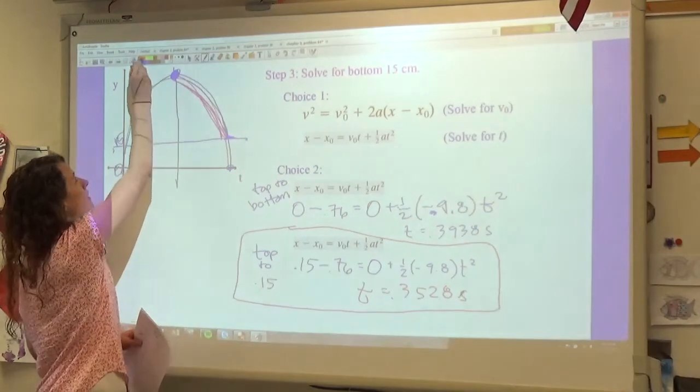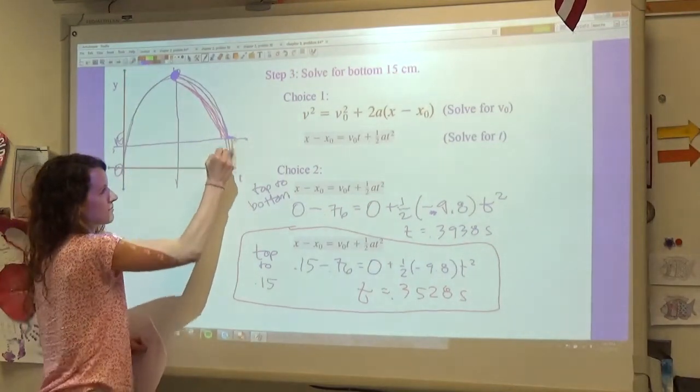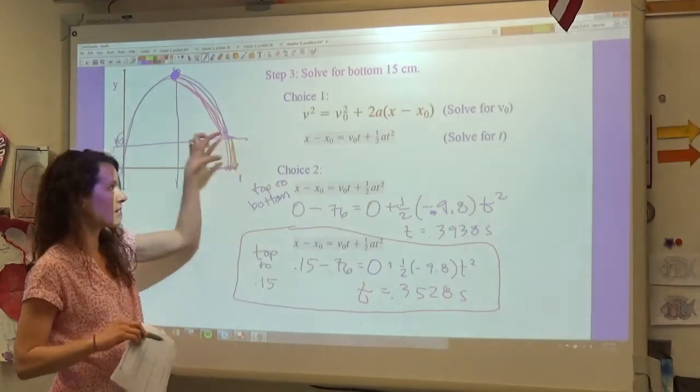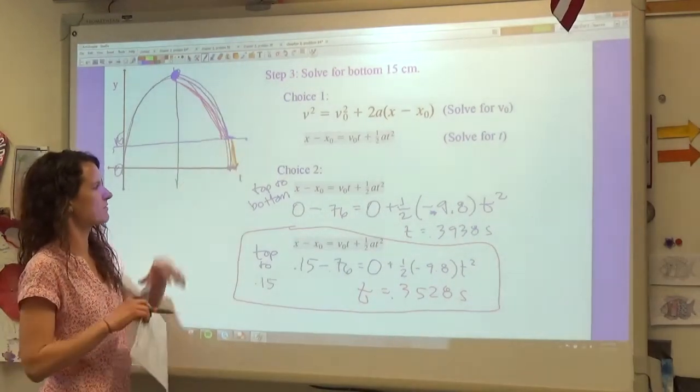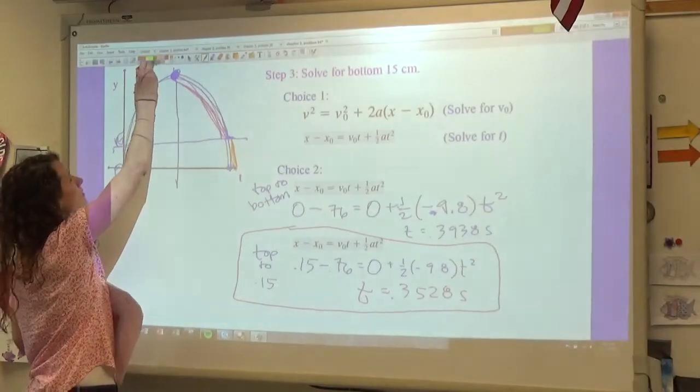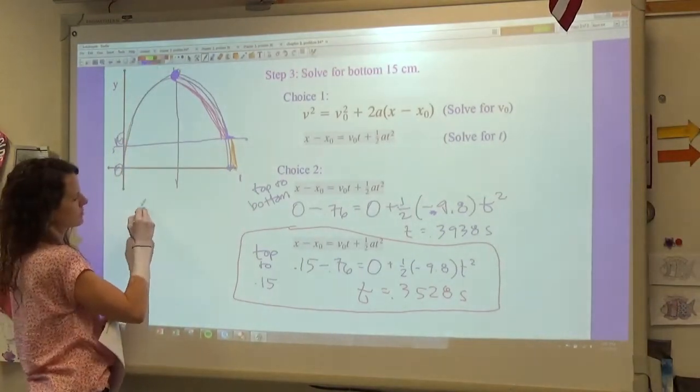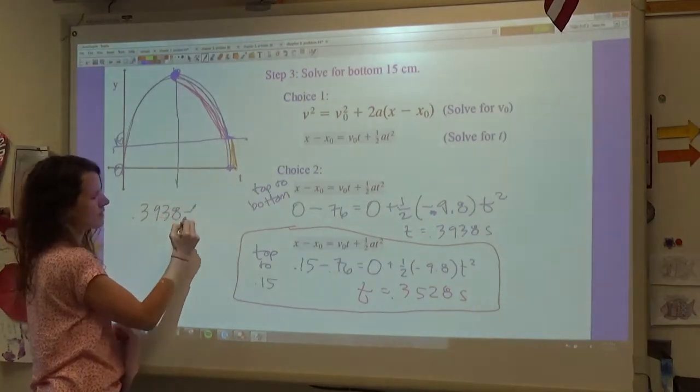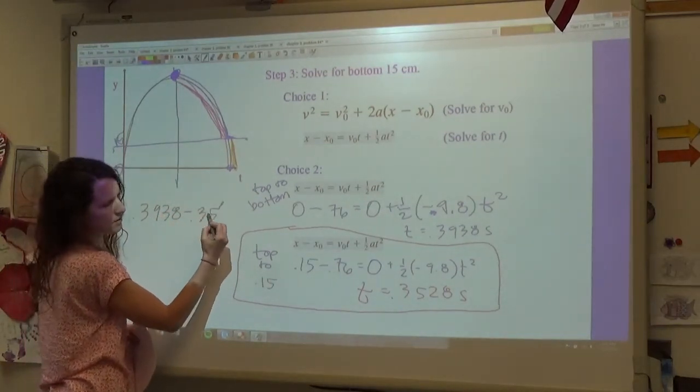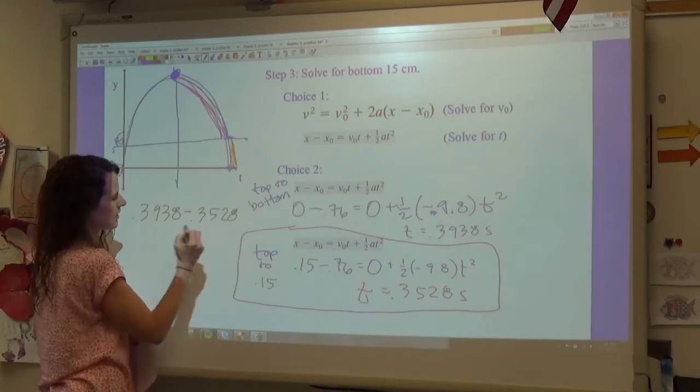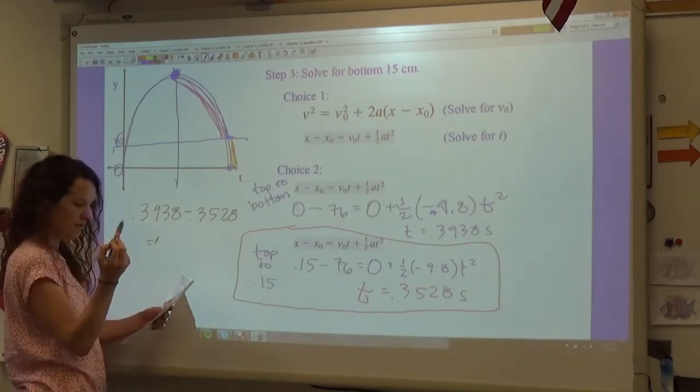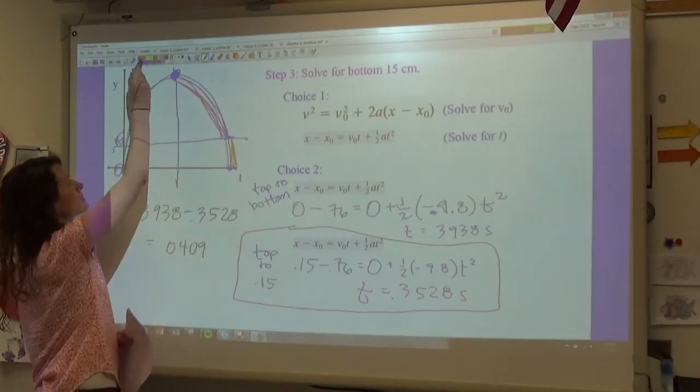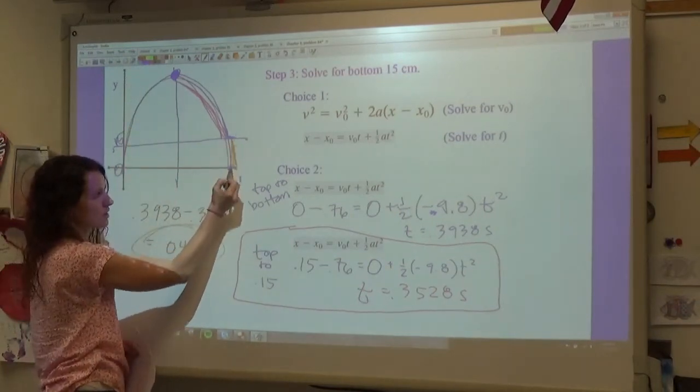But really what I want to know is how long this time is. And so what I'll do is I'll take this blue time minus the pink time, and we'll end up with this orange time, this bottom 15 centimeters. So here we go, we have 0.3938 minus 0.3528, and then we end up with a time of 0.0409.